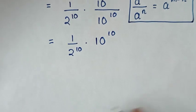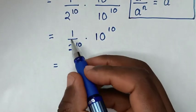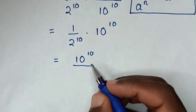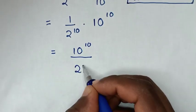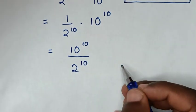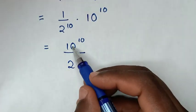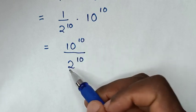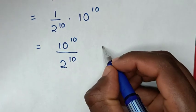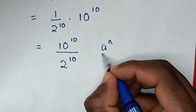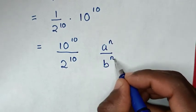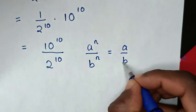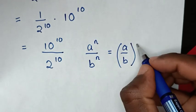Then in the next step, it will be equal to 1 times 10 power of 10, which is 10 power of 10, over 2 power of 10. Then, from this division of exponents with same power but different bases, it is in the form of a power of n over b power of n, which is equal to (a over b) bracket power of n.